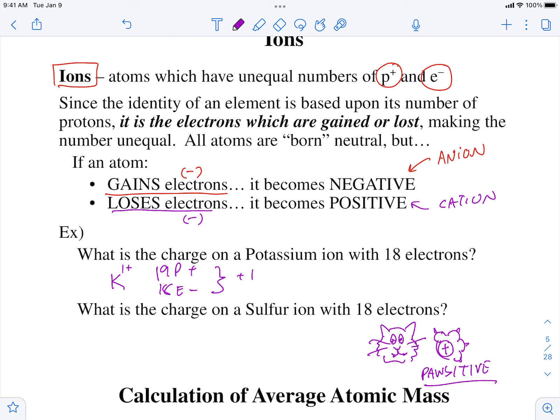Let's try another one. Sulfur. Find sulfur. What's the atomic number on sulfur? 16 protons.